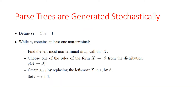We can think of a parse tree as the outcome of a generative stochastic process that generates strings. The first string generated is the special start symbol, for i = 1. For subsequent strings, we repeat the following procedure until s_i contains at least one non-terminal: find the leftmost non-terminal in s_i and denote it x; choose a rule of the form x → β from distribution q(x → β); create s_{i+1} by replacing the leftmost x in s_i by β; then increment i.